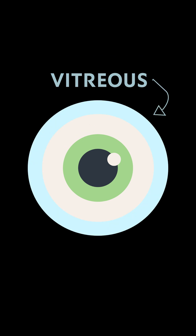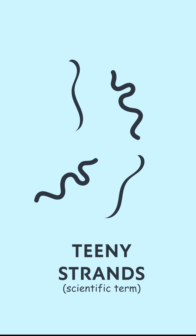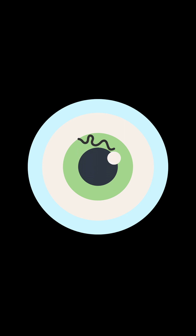Eye floaters are caused by normal age-related changes to your eyes. There's this gel called vitreous that basically keeps your eyes protected from the elements while they're open, but over the course of a lifetime, parts of the gel will begin to clump together, forming teeny strands. When light hits your eyes, these strands cast a shadow on your retina, the part of your eye that detects light, and that registers in your brain as a little floaty string moving across your vision.